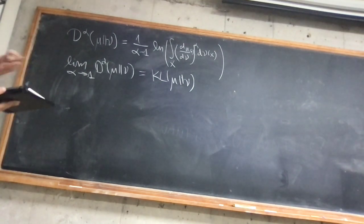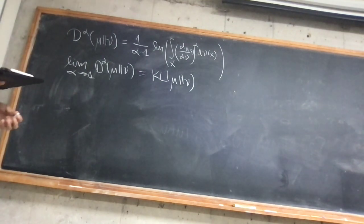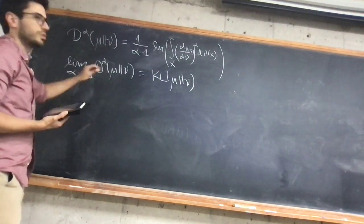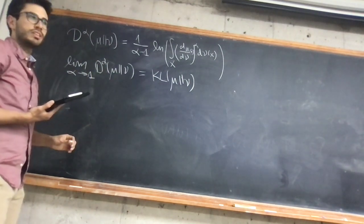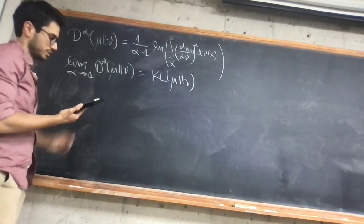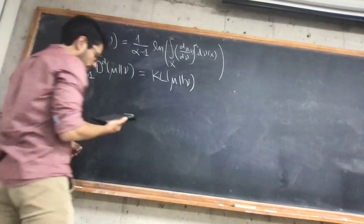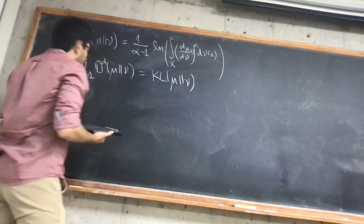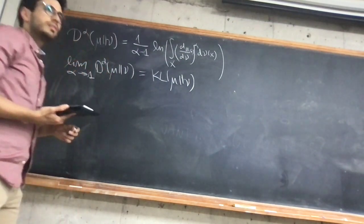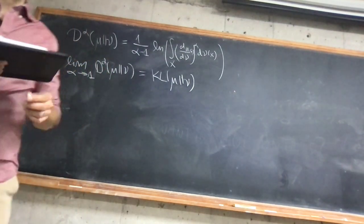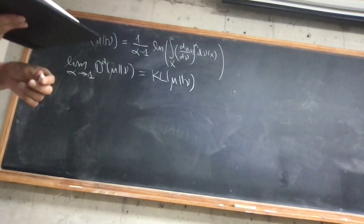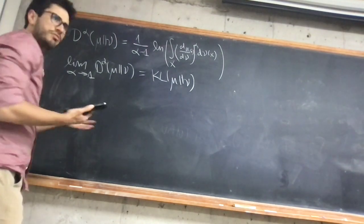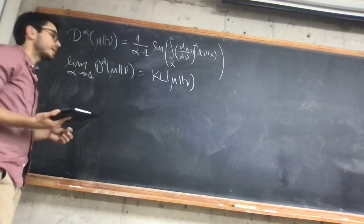That might be useful for other reasons. In particular, these guys who wrote this paper work on privacy, and it's important to control range divergences of certain order. This is the Altschuler-Talwar paper, and there's also a video from last time.